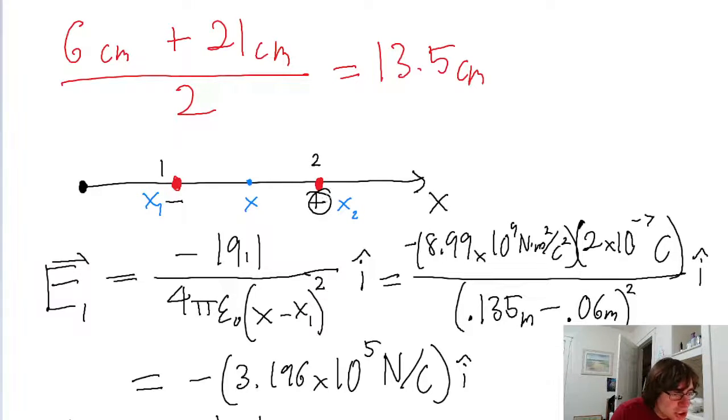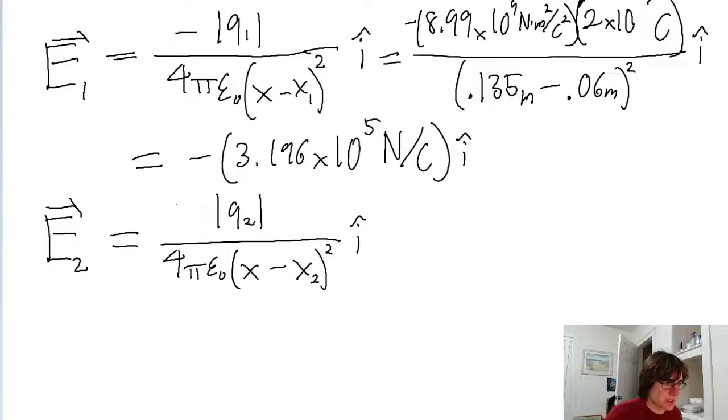Because this charge 2 is positive. So the electric field is pointing away towards the left direction, in the negative x direction where the midpoint is. So this whole thing is again going to be negative.